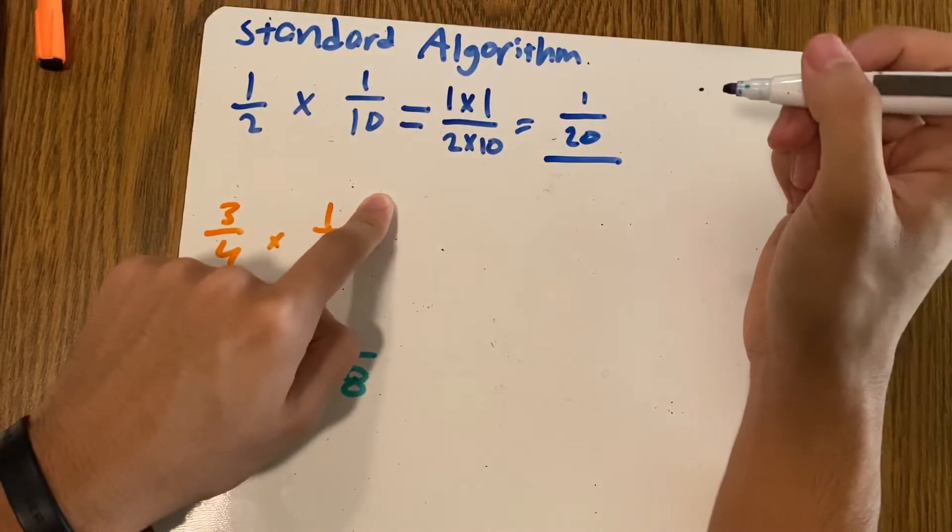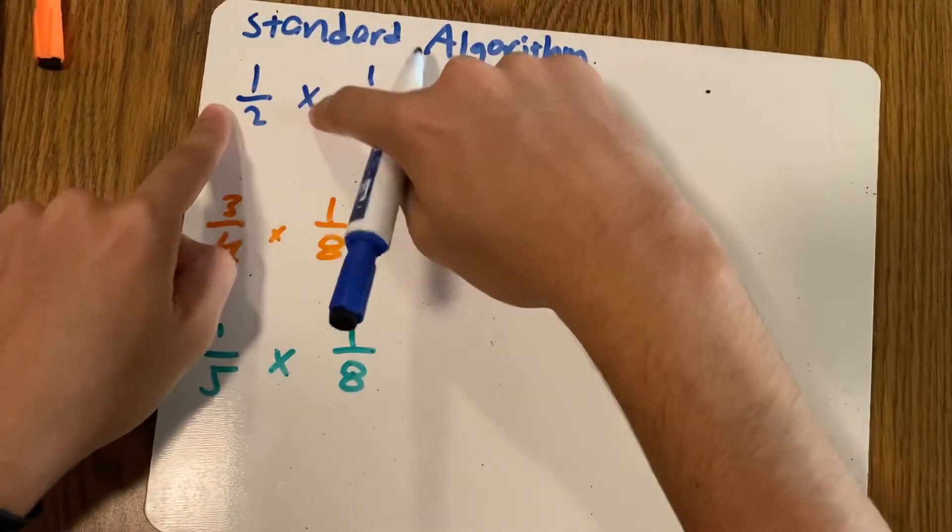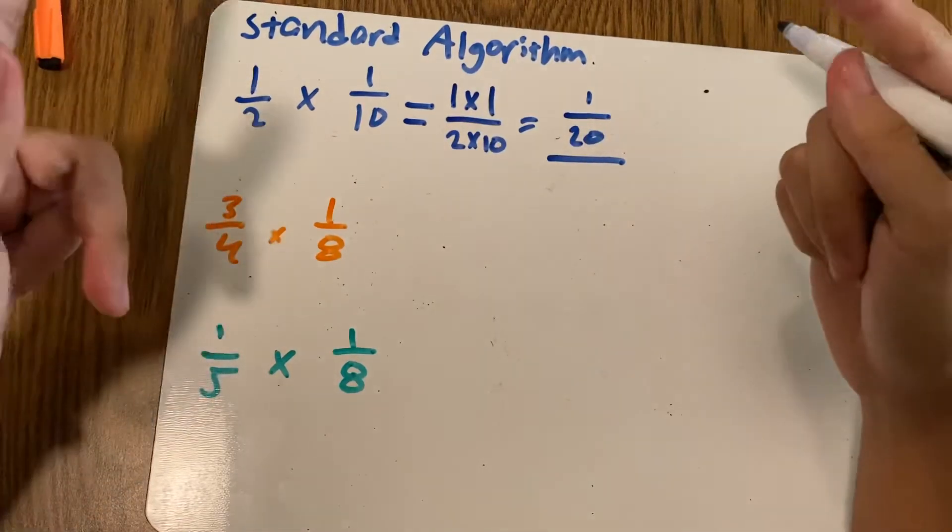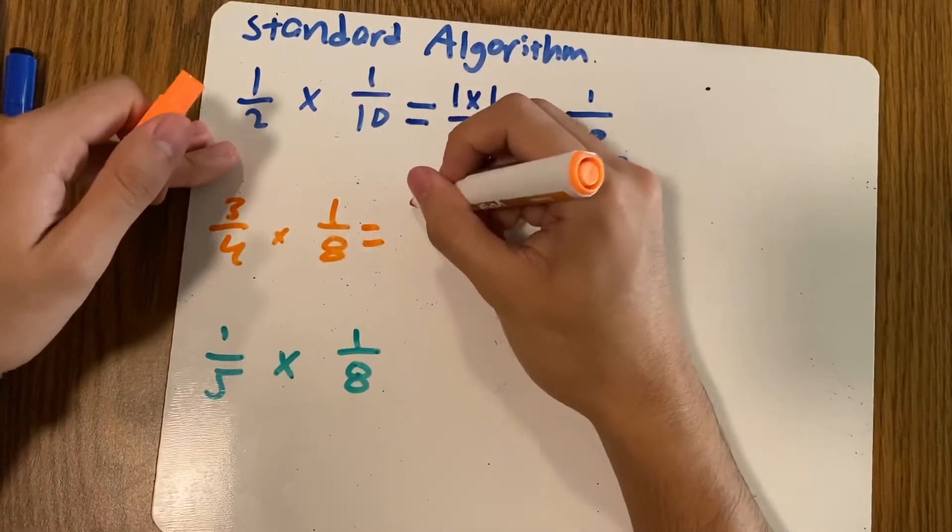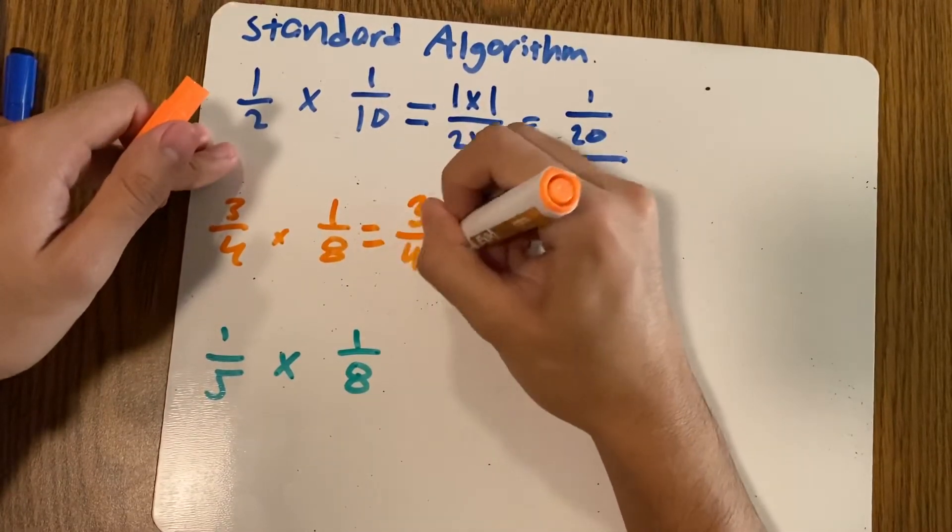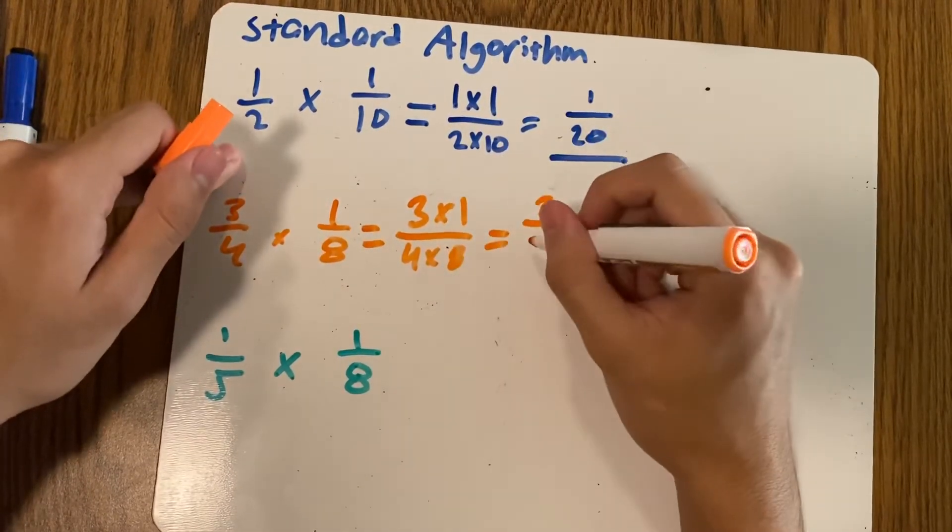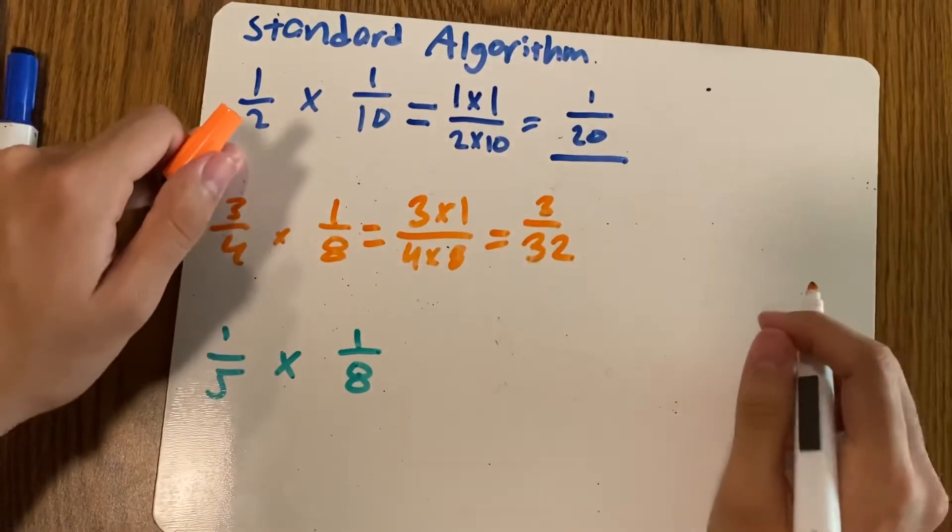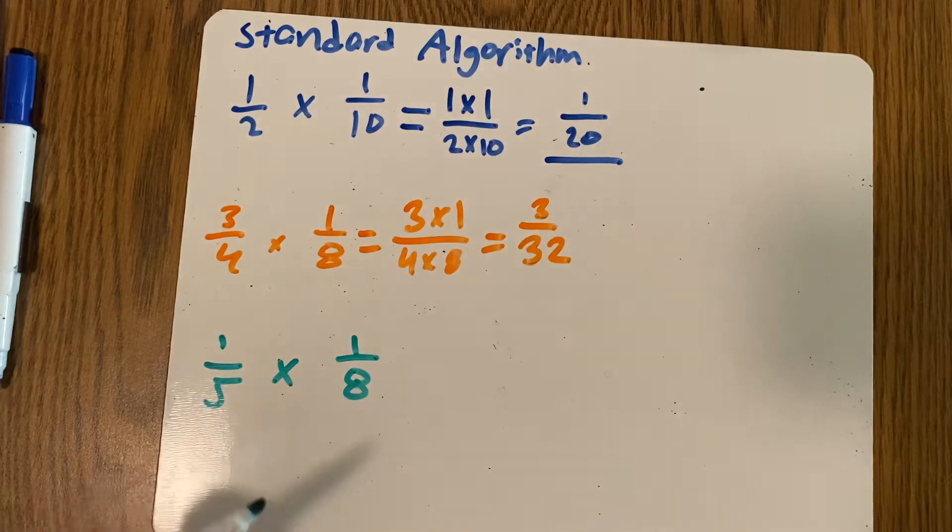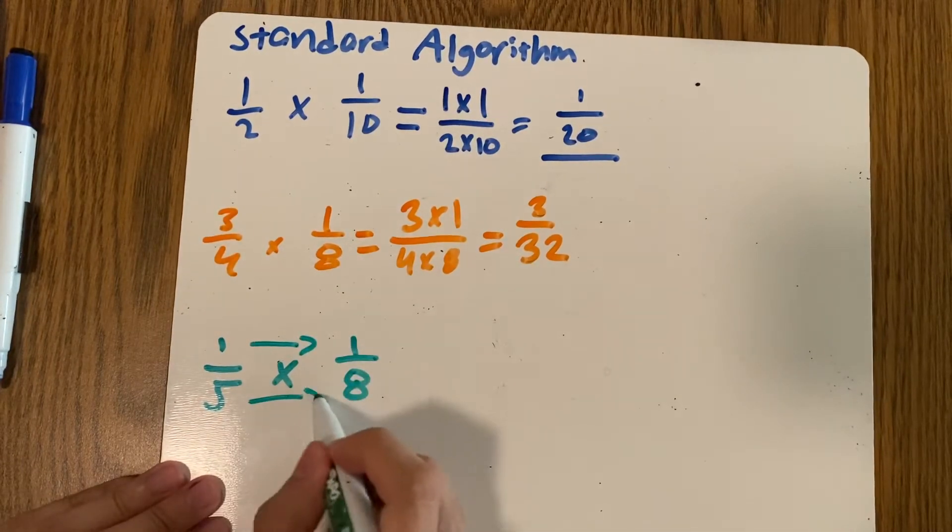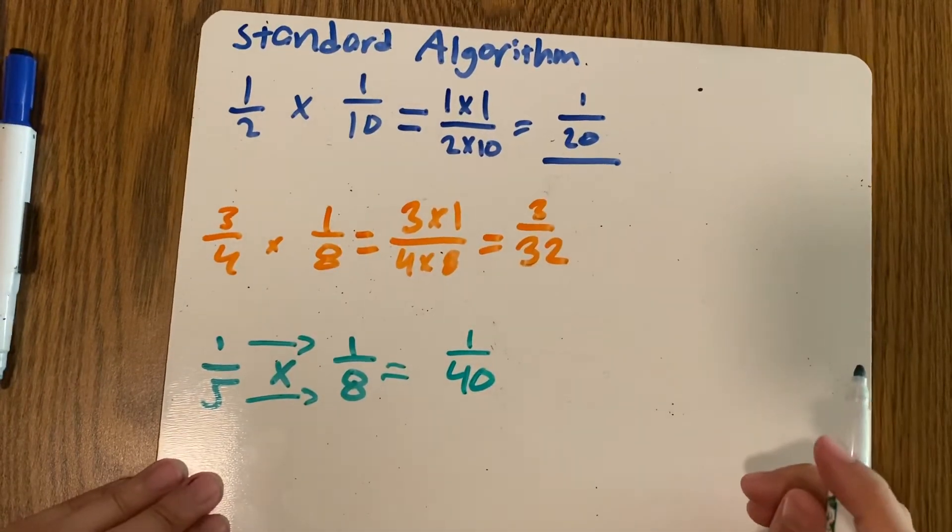So one times one is one, two times ten is twenty. And that is our answer. Simple, right? So again, all we did is we multiplied across: one times one is one, two times ten is twenty. And that's your answer. That's it. Let's go ahead and do another one. Three times one, four times eight. Again, I am just multiplying straight across. Three times one is three, four times eight is 32. And that's your answer. Simple, right? Again, you're just multiplying straight across. One times one is one, five times eight is 40. So that is your answer.